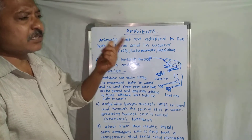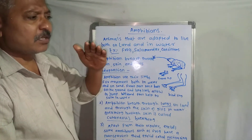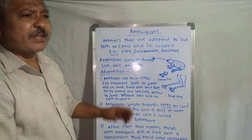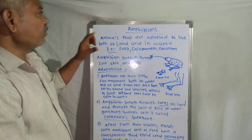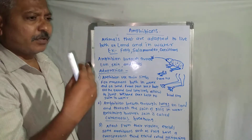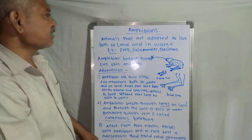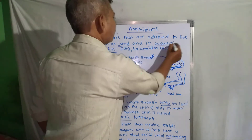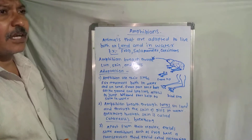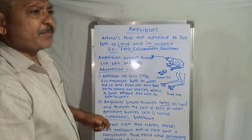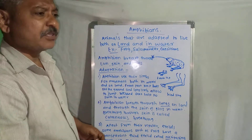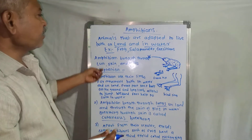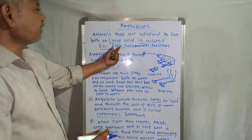Animals that live in water are called aquatic animals, and animals that live on land are called terrestrial animals. But there are some animals that live on both land and in water, and these are called amphibians. An animal that lives in water and on land is called an amphibian.